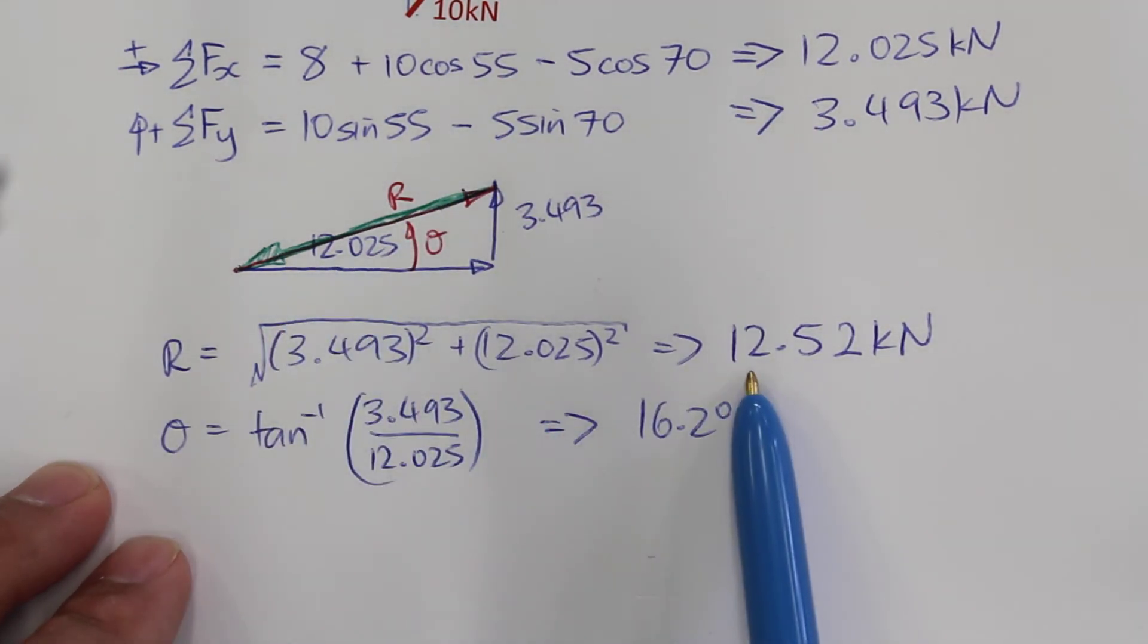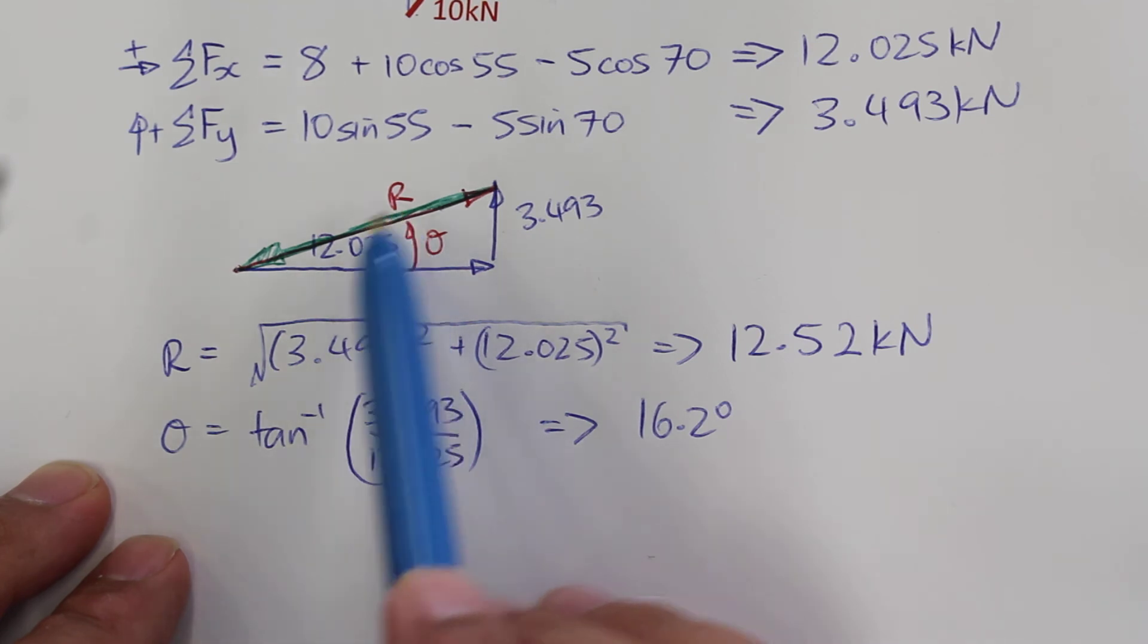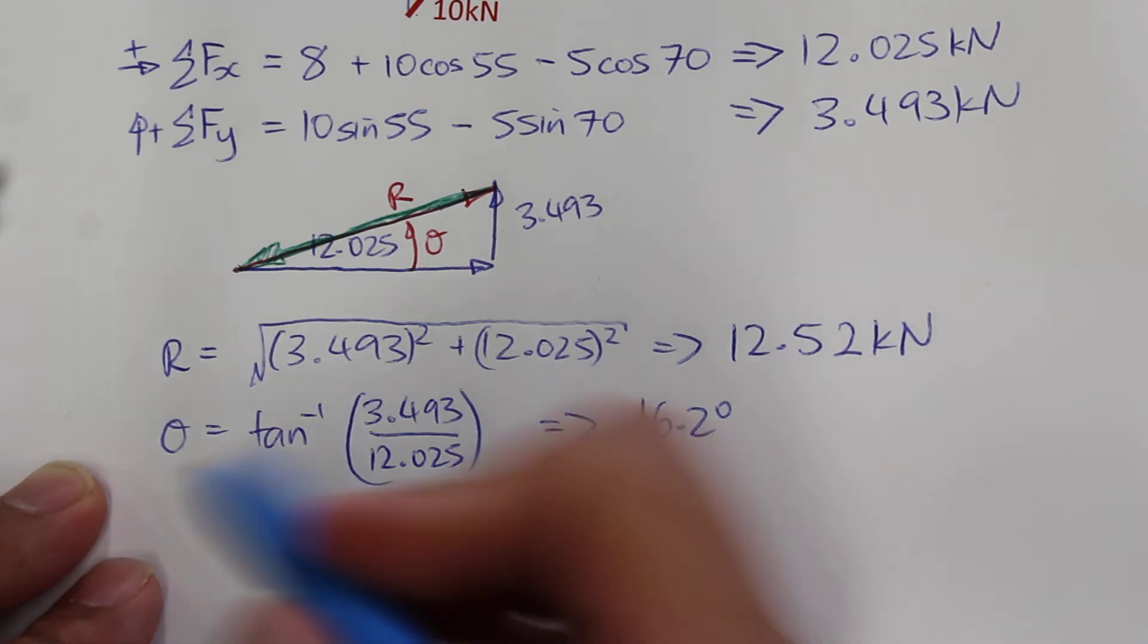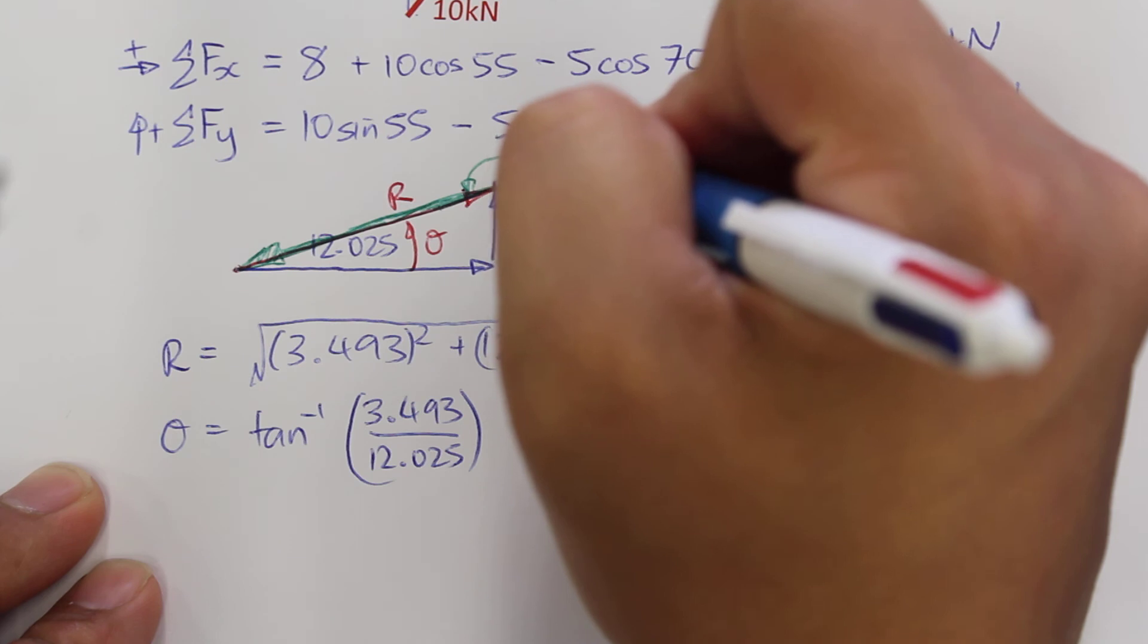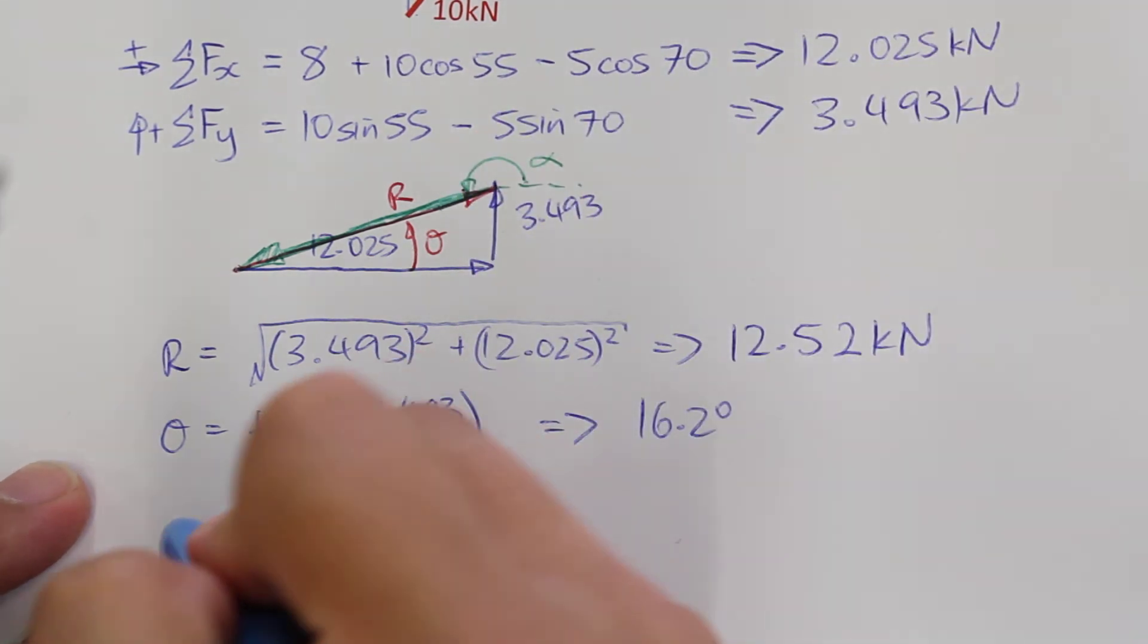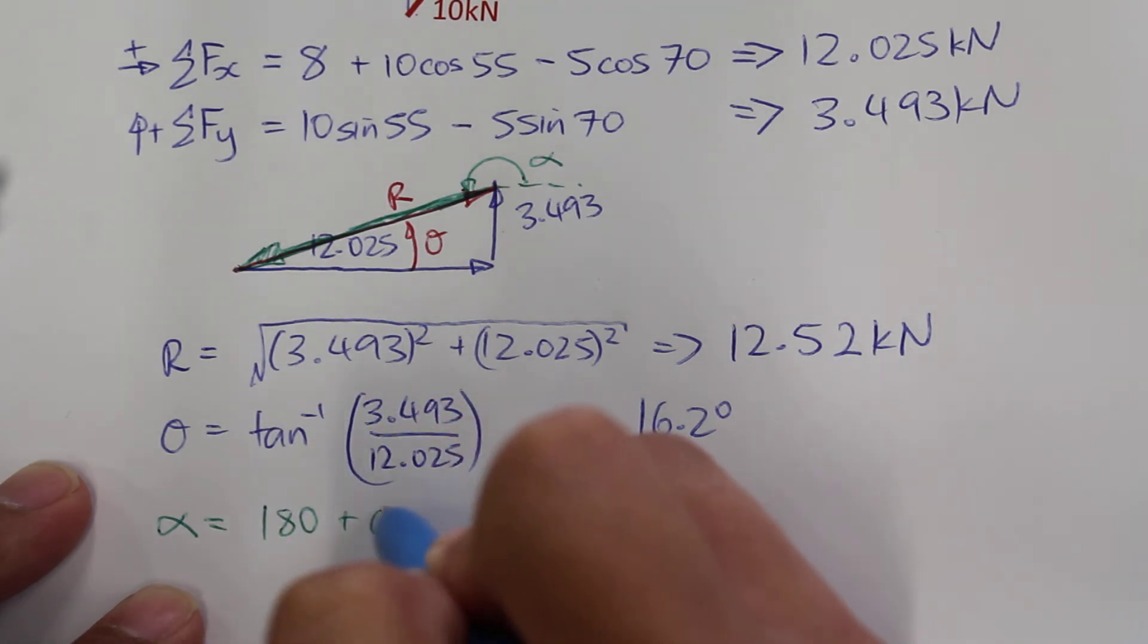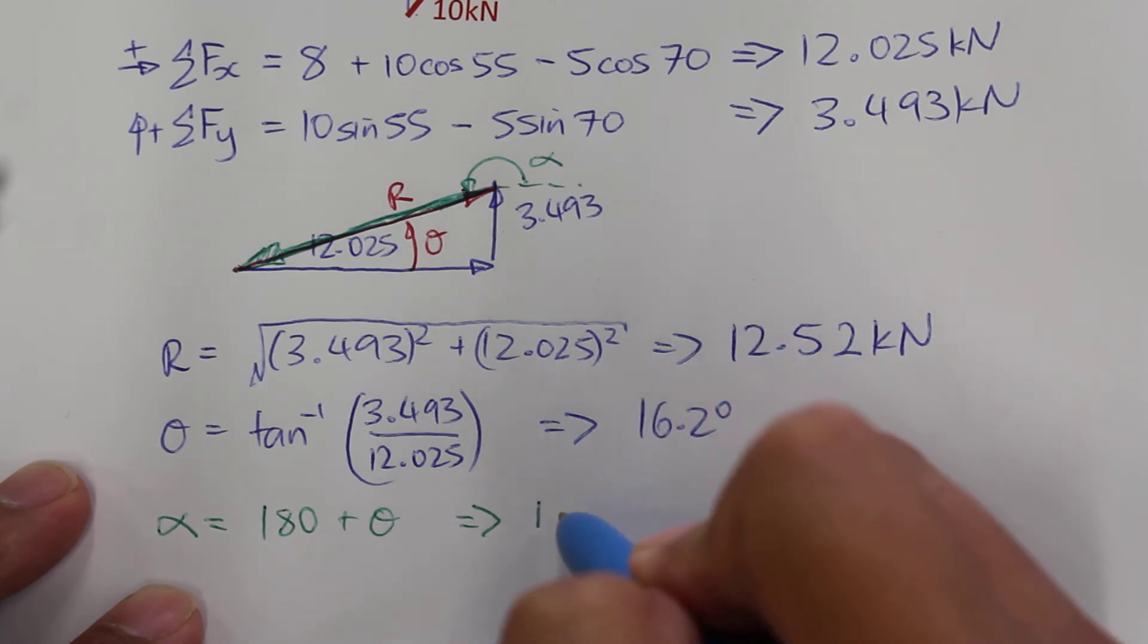So the magnitude will be for the equilibrium 12.52 kN and the direction will be 180 degrees in addition to this angle which we have here. So the angle for the equilibrium, which will be this angle here, I'll call that alpha. So alpha will be equal to 180 degrees plus theta. This is equal to 196.2 degrees.